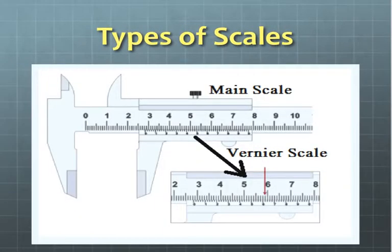Scales: A vernier caliper has two main scales. One is known as the main scale and the other is the secondary scale, also known as the vernier scale.